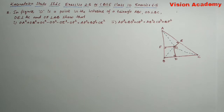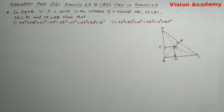In the figure, O is a point in the interior of triangle ABC. OD is perpendicular to BC, OE is perpendicular to AC, and OF is perpendicular to AB. Show that: OA² + OB² + OC² − OD² − OE² − OF² = AF² + BD² + CE².